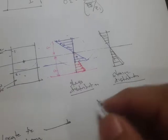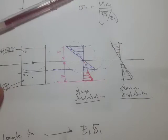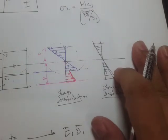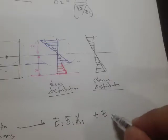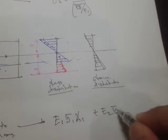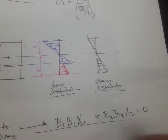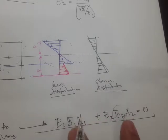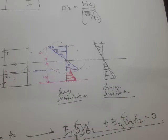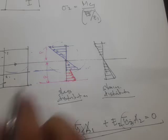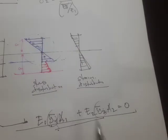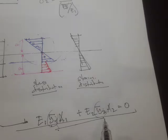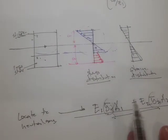To locate the neutral axis we use the equation: E₁·ȳ₁·A₁ + E₂·ȳ₂·A₂ = 0, where ȳ₁ and ȳ₂ are the distances from the neutral axis to the centroid of each material. From this equation we can obtain the location of the neutral axis. This is analogous to the force-deformation relationship in axial loadings, but using moment and the moment-curvature relation M = ĒĪ / ρ.